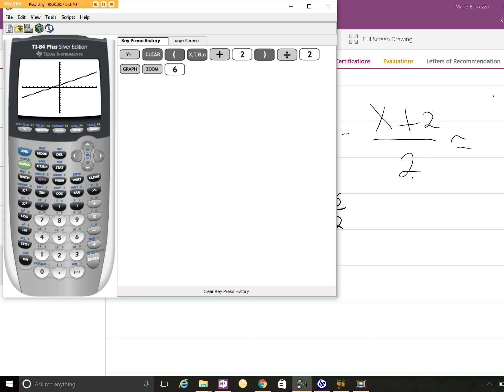You can also go to second graph to get the table. And as you know, 5 over 2 is going to give us 2.5.